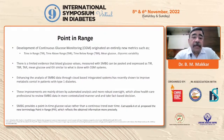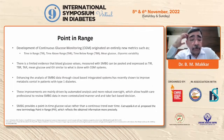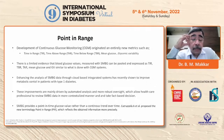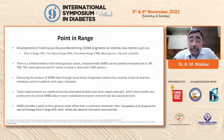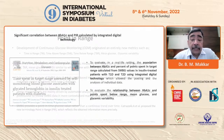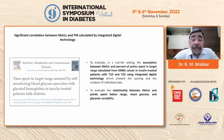With CGM we have started using new metrics like time in range and time above range. We are now looking at whether enhancing analysis of SMBG data through cloud-based integrated systems can improve understanding of SMBG and whether daily SMBG point measurements can serve as surrogate markers of glycemic variability.